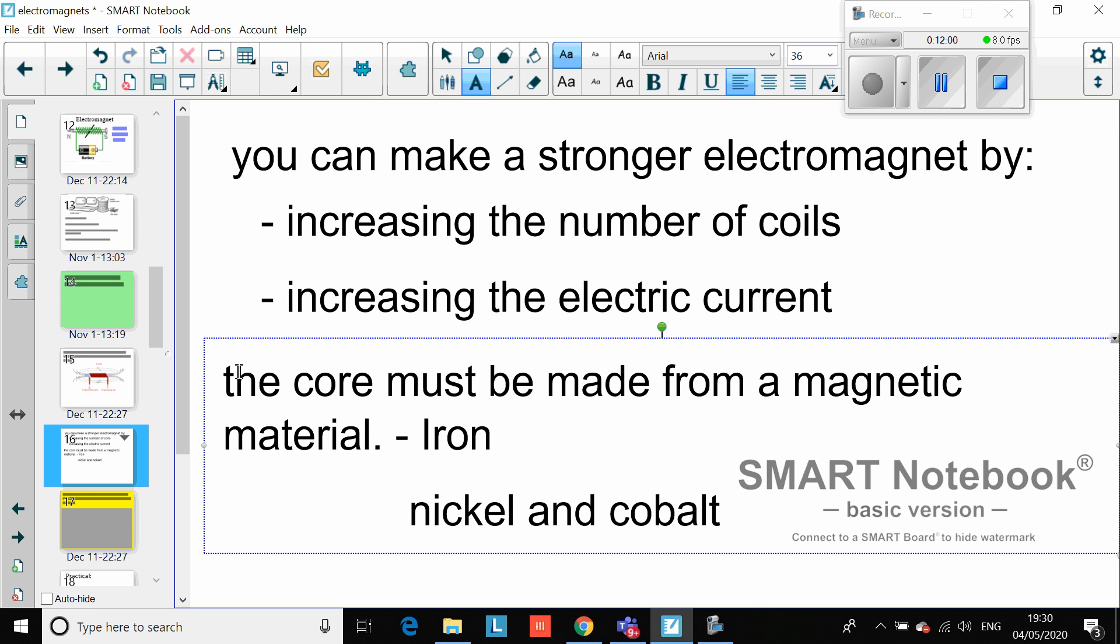Some of you might notice that steel is missing from there, but steel isn't actually a naturally occurring metal - it's man-made, a combination of iron and carbon. So although it is magnetic, it's not naturally magnetic. But we'll include it in brackets because it is made from iron.